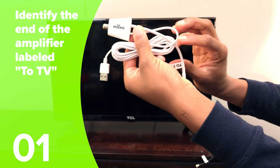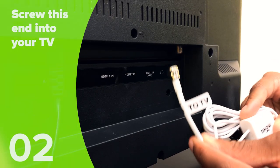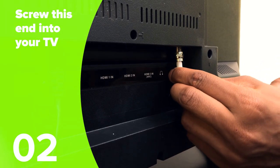First, make sure to identify the side of the amplifier labeled 2TV. Screw this end into the coaxial input of your television.